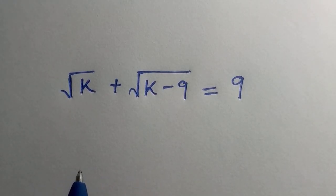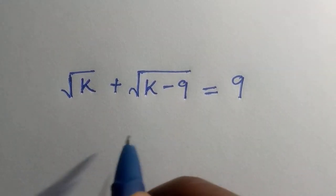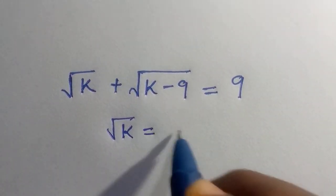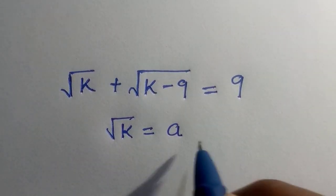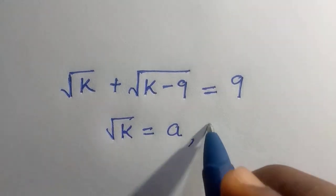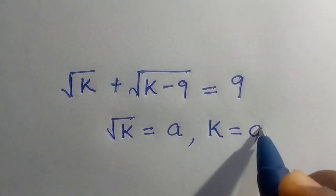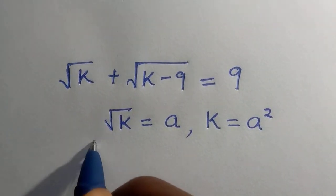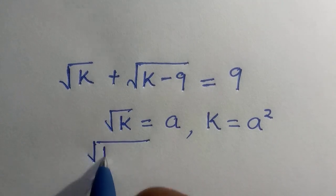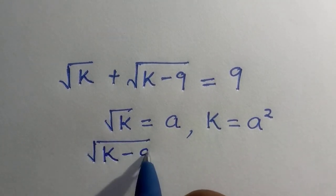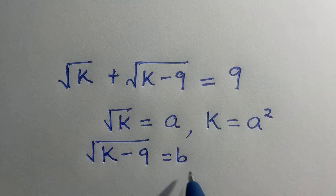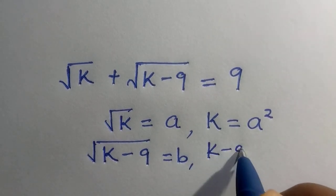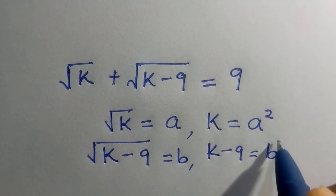Suppose I let this one to be another letter. If I let root k equals a, definitely we are going to have k equals a square. And if I let square root of k minus 9 equals b, then we have k minus 9 equals b square.